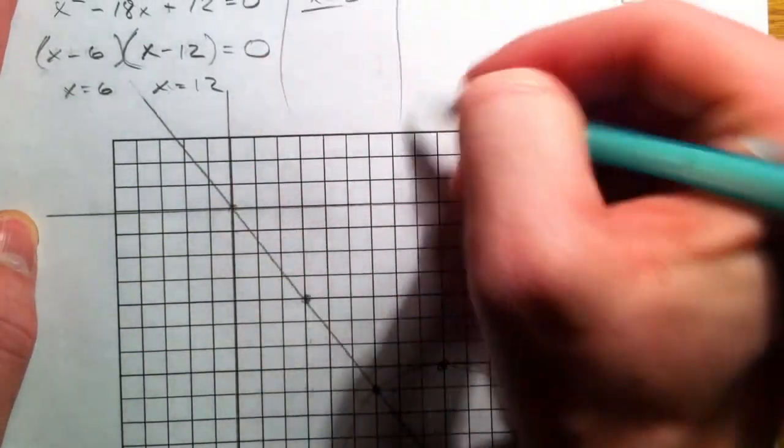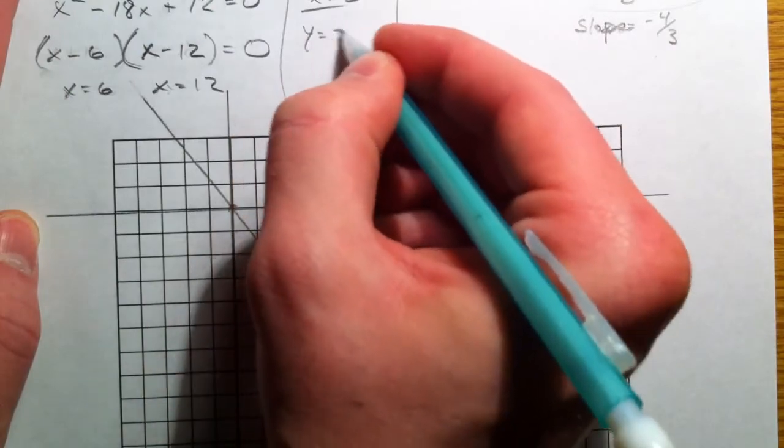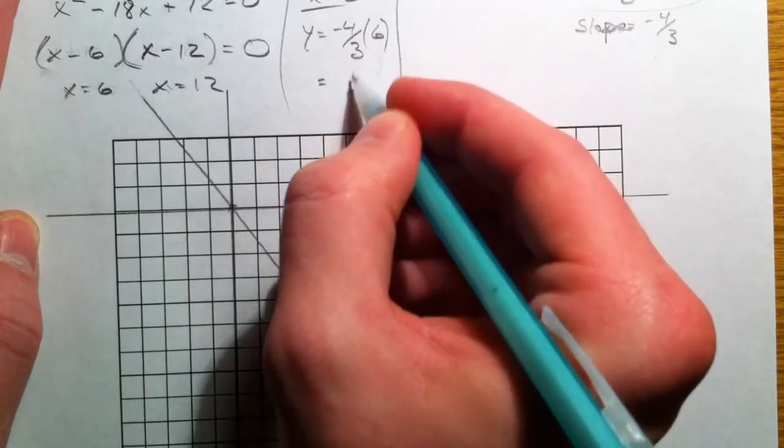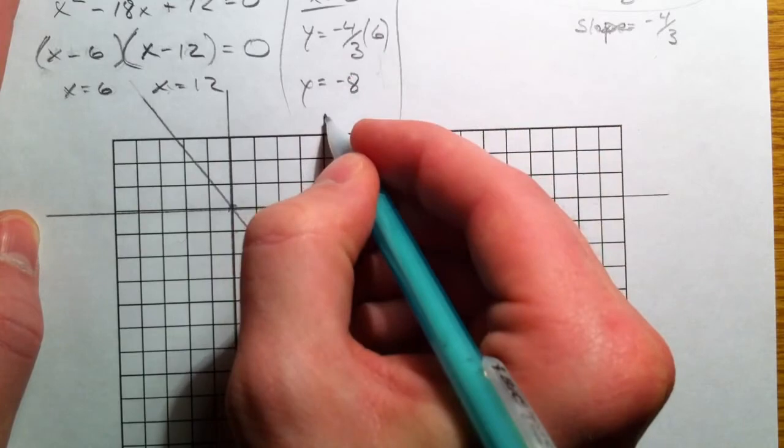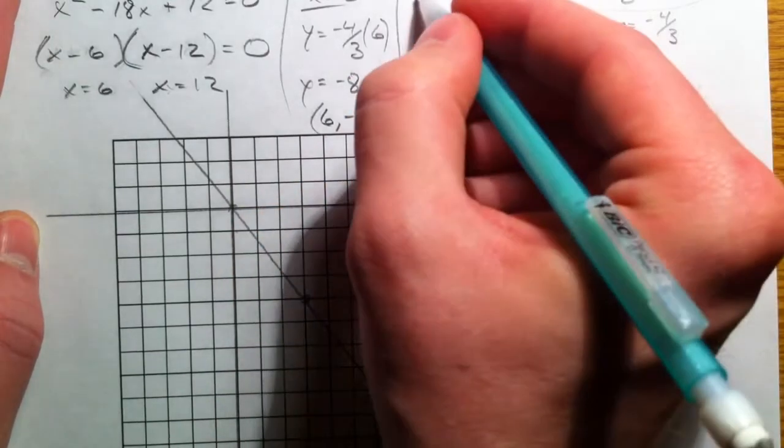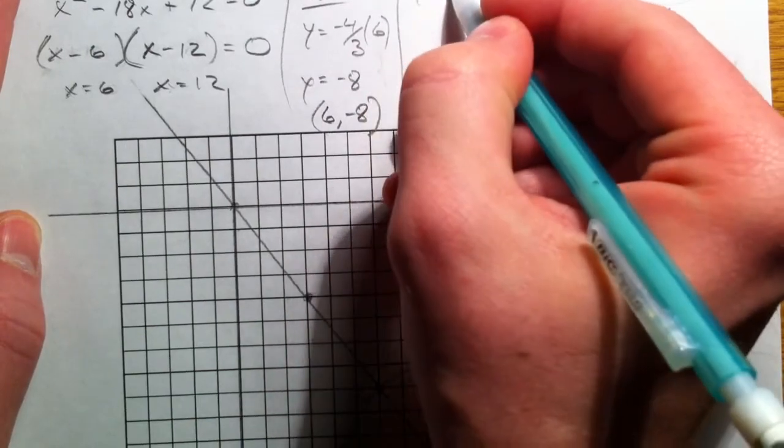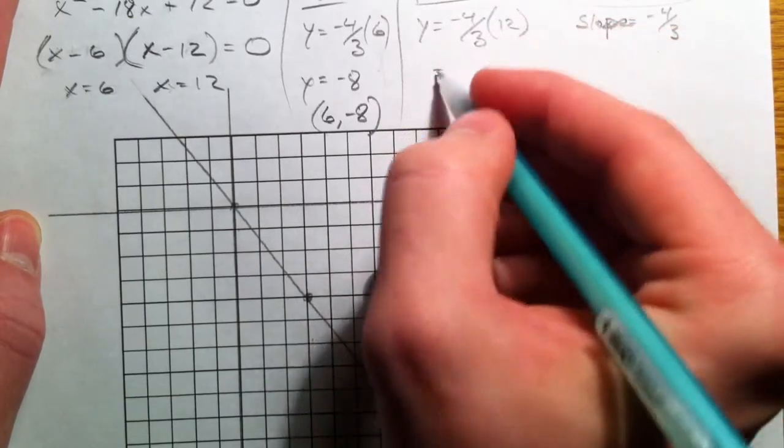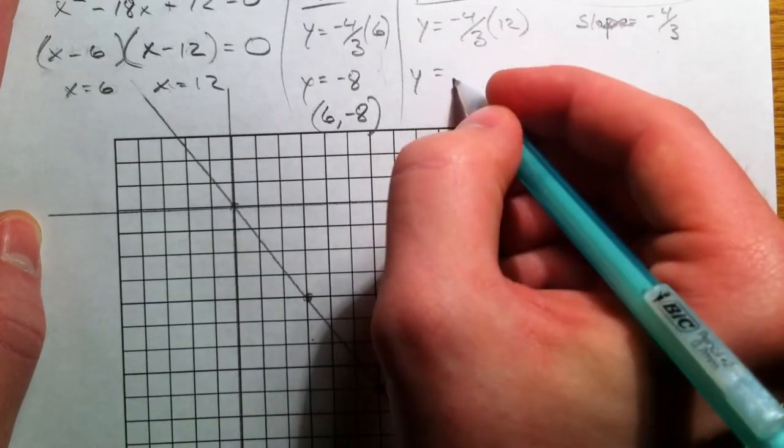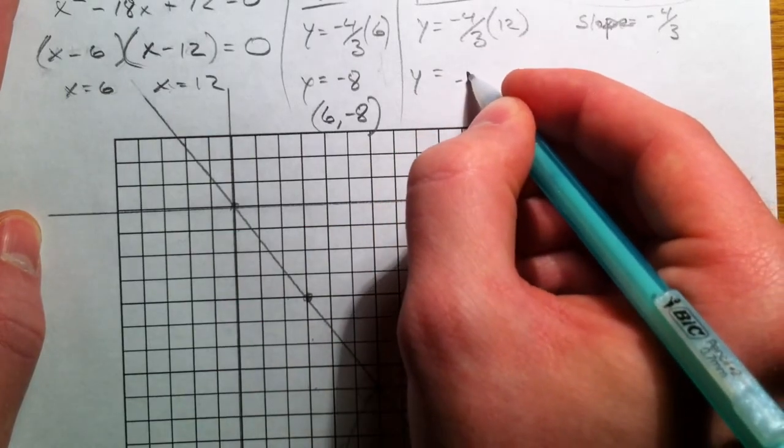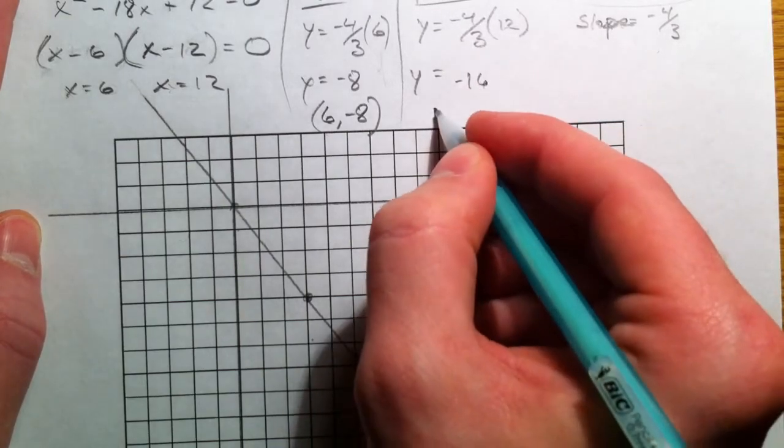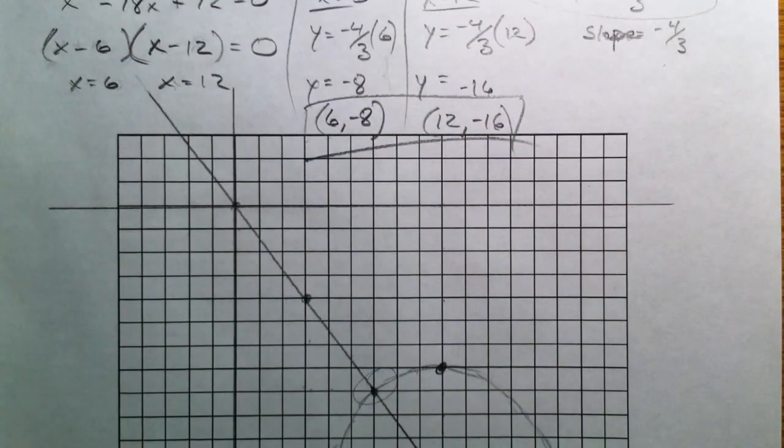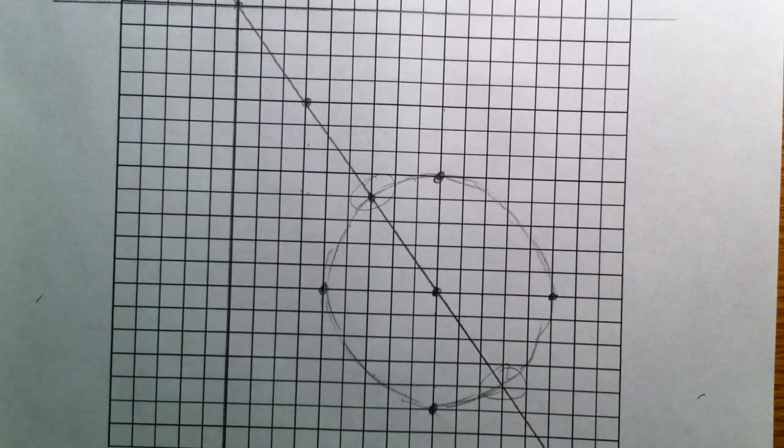So, if x equals 6, we get y equals negative 4 thirds times 6. 6 divided by 3 is 2, so negative 8. So, 6, negative 8. And if x equals 12, y equals negative 4 thirds times 12, which is negative 16. So, 12, negative 16 is our other answer. Done and done. And that's what those two points are on our picture.